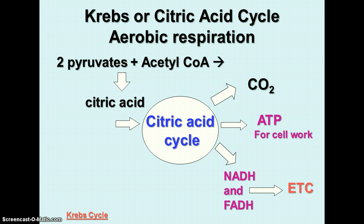The pyruvate molecules, when there's oxygen present, go through the next stage, which is the Krebs cycle, also called the citric acid cycle. The two pyruvates go through a couple of changes and join with another molecule called coenzyme A to produce acetyl-CoA, which then combines with another molecule in the matrix of the mitochondrion to produce citric acid.